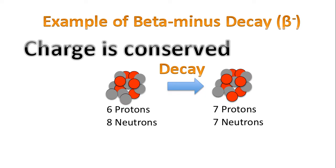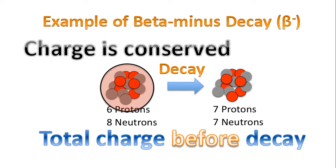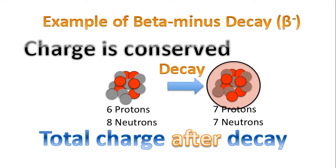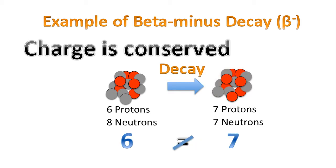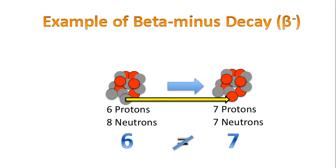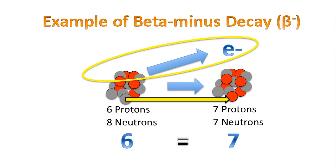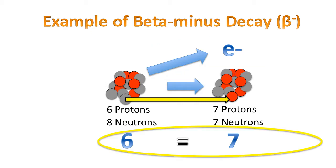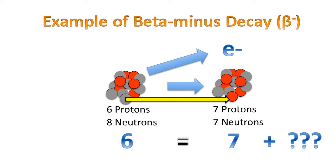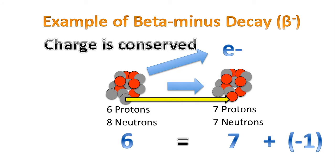During all beta decays, charge has to be conserved. That means the total charge before the decay has to equal the total charge after the decay. Neutrons do not have any charge, so before the decay we have six protons, a charge of plus six. After the decay we have seven protons, so charge seems to not be conserved, as six is not equal to seven. However, this is not the complete process. A neutron transforms into a proton, and in addition, an electron is emitted or ejected by the nucleus. Recalling that the charge of an electron is negative one, now charge is conserved: seven plus negative one equals six.